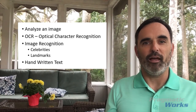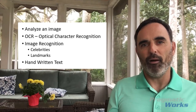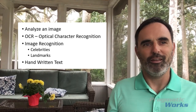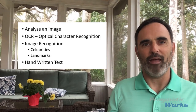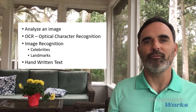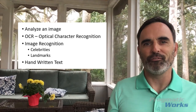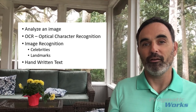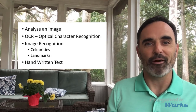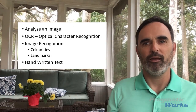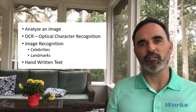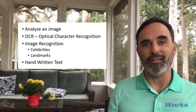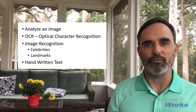It also has a library of about 200,000 celebrity images and 9,000 landmarks. So we can use the Computer Vision API to identify whether a famous person or a landmark is included in a picture. And similar to the OCR, we can use it to analyze and read handwritten text.